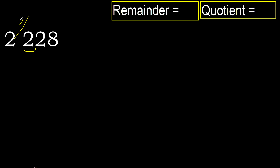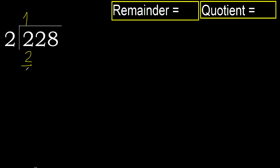2 multiplied by 2 is 4 — 4 is greater. 2 multiplied by 1 is 2 — it's not greater. Subtract. Next, eliminate 0 on this side.